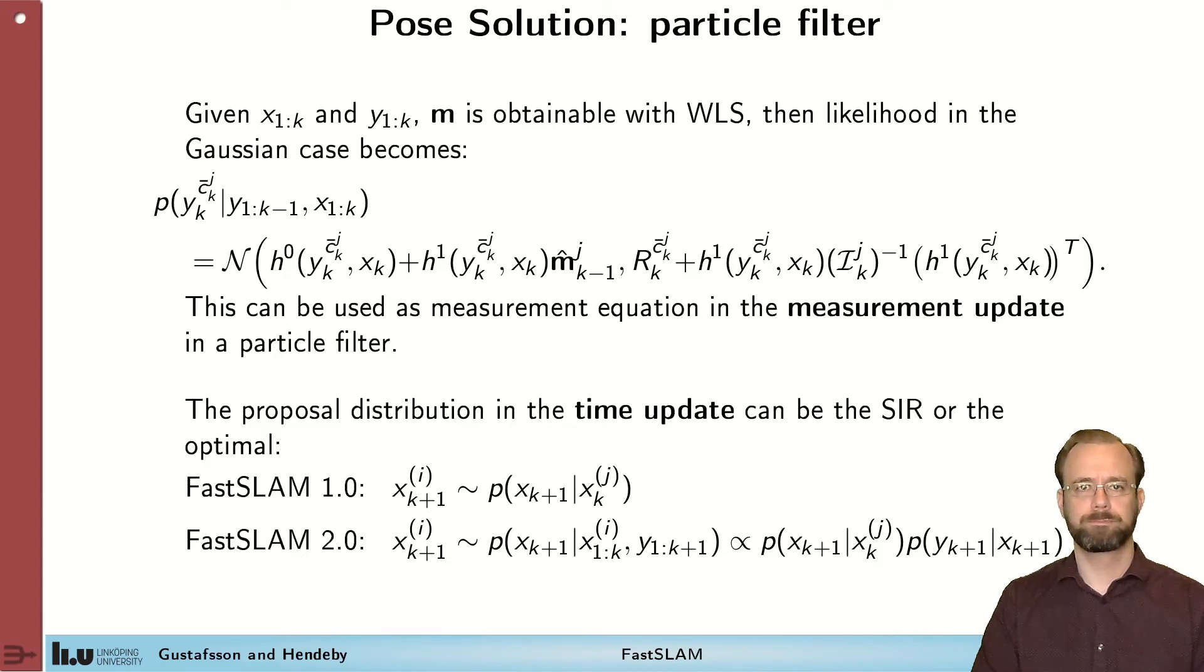We will now show how we can solve for the pose, the trajectory, using a particle filter. One important part of this derivation is the fact that given the trajectory and the measurements, the map can be solved for using an ordinary weighted least squares solution as we just seen. And we were also able to derive an expression for the uncertainty of the single landmarks. That means that we can construct a measurement likelihood here for a specific measurement that matched to a certain landmark that is based on the measurement equation. This can be used as a normal measurement update in the particle filter to weight the particle weights.